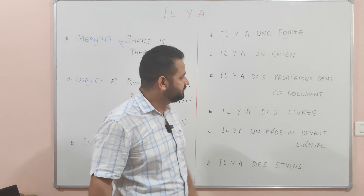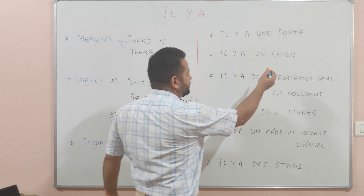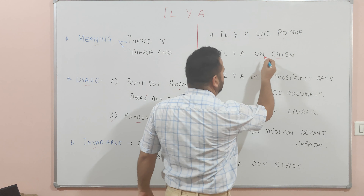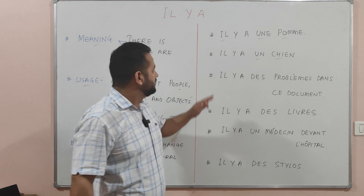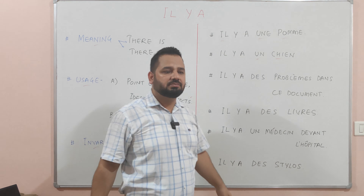A dog — and dog is masculine. So 'il y a un chien' — there is a dog.